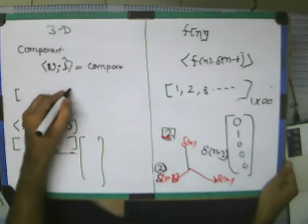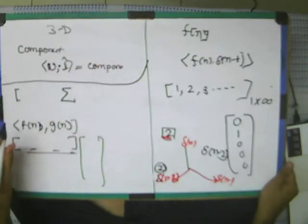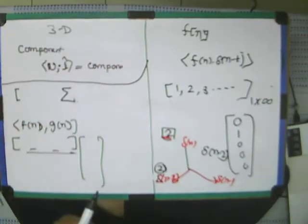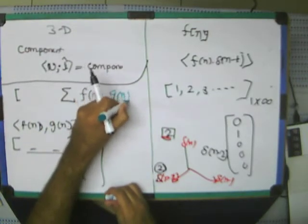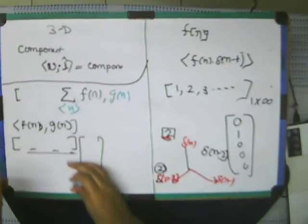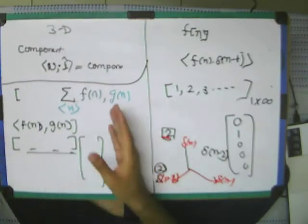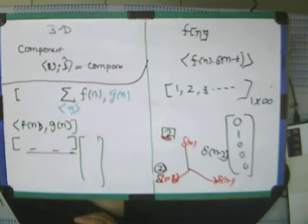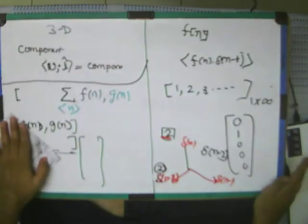What is happening? It will be nothing but summation: Σ f(n)g(n) over n. This is the dot product, which always gives a single value. By this, we understand how to represent this function.